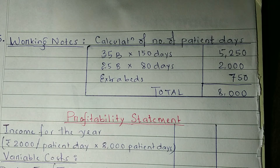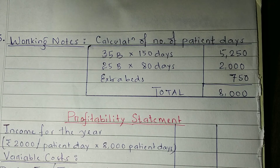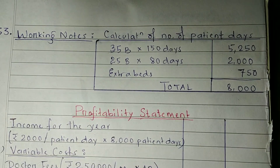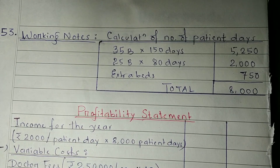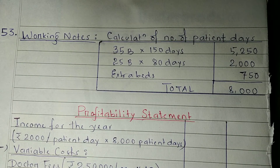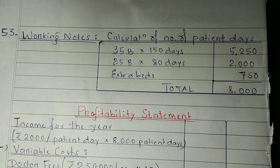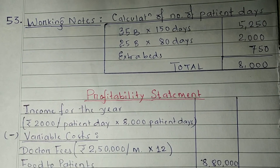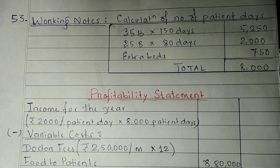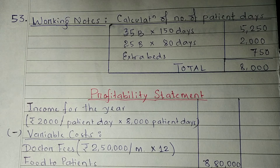Now we have to make a profitability statement — just like an income statement. We do: Income minus Variable Cost equals Contribution, then Contribution minus Fixed Cost equals Profit. So let's start: Income for the year — each patient pays ₹2,000 per day, and total patient days are 8,000.